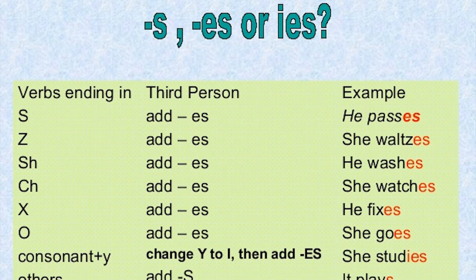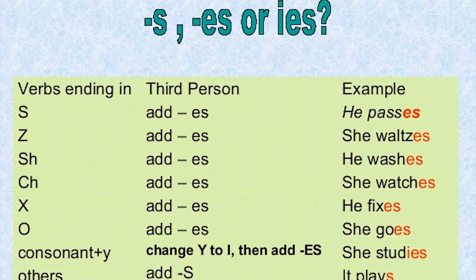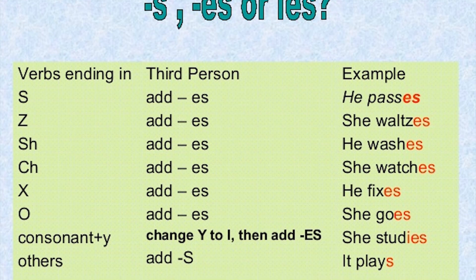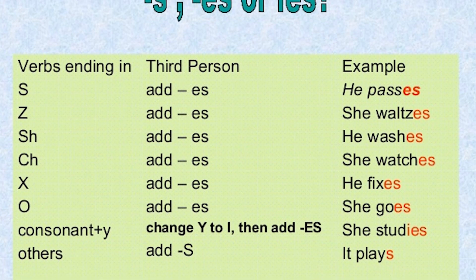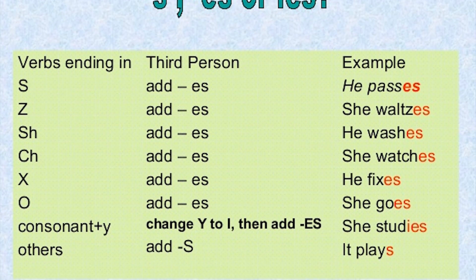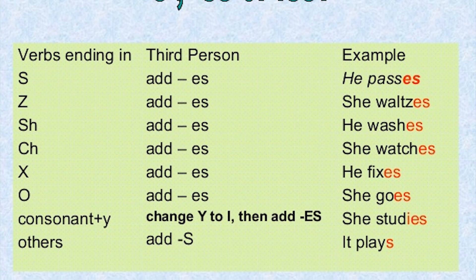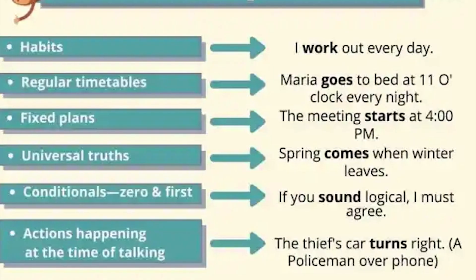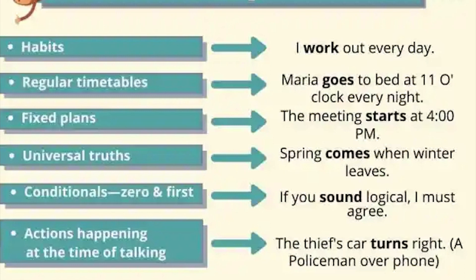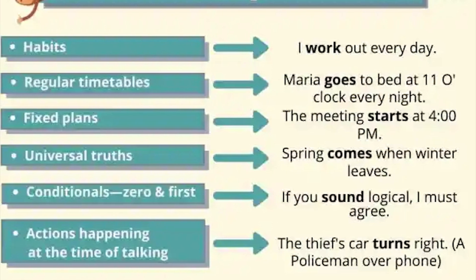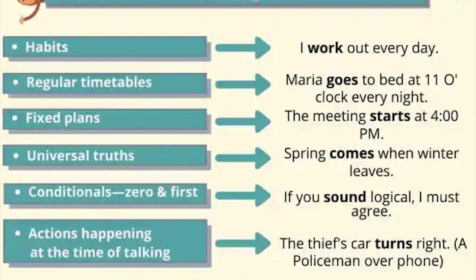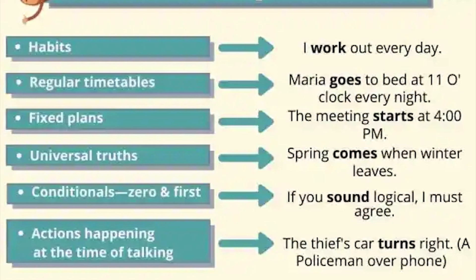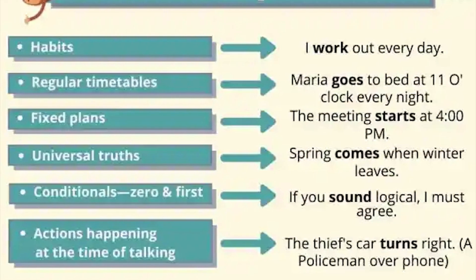Rule 2 — when it comes to the third person singular, the letter 's' or the letters 'es' should be added. Rule 3 — for universal truth, habitual action, and for future planned action, the simple present tense can be used.